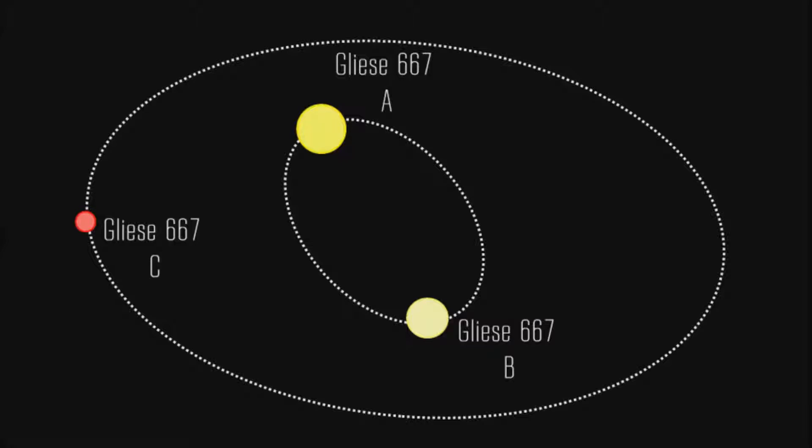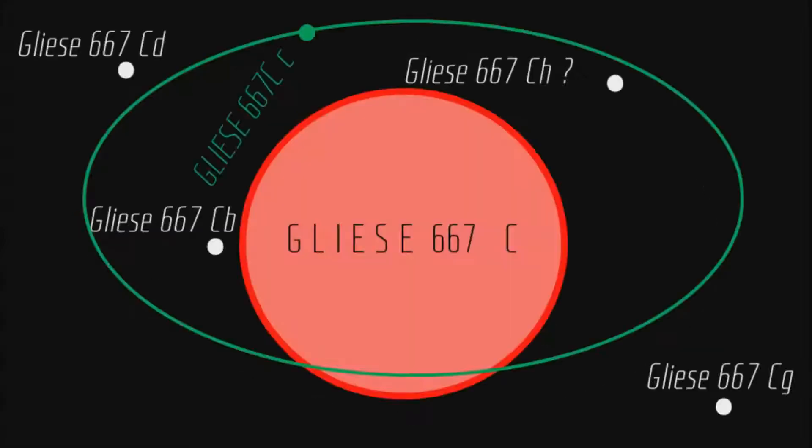Gliese 667 is a real triple star system, and it is only 23 light-years away from Earth. In this system, Gliese 667C, a red dwarf star, orbits the pair composed by Gliese 667A and Gliese 667B.